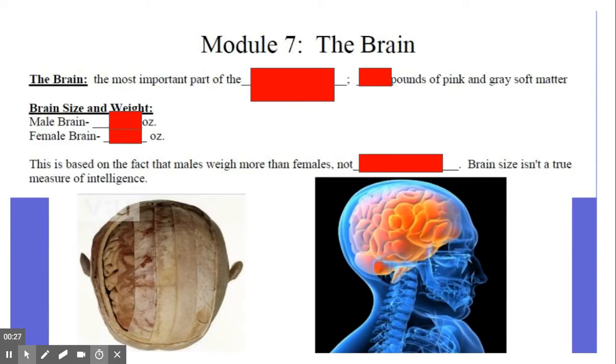The brain is the most important part of the central nervous system and weighs roughly three pounds. When we talk about the differences between males and females, the male brain does weigh slightly more at 48 ounces compared to the female brain at roughly 44 ounces.